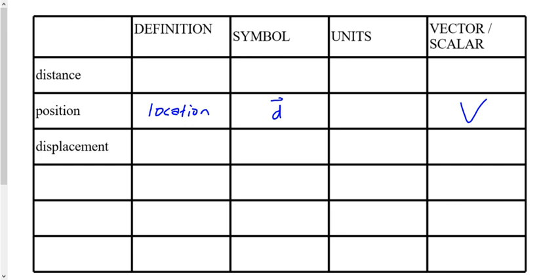Position is a vector, and the units for position would be meters — those are the standard units. We could sometimes use kilometers or even non-metric units like miles or feet, but the standard units — if in doubt use these units — are meters. That's the same for distance and displacement as well.